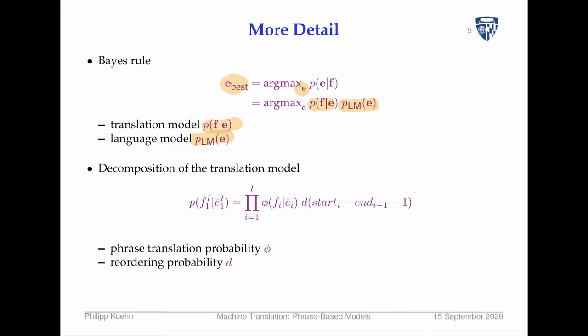The number of phrases I is the same for English and foreign phrases because we have a one-to-one mapping between them. We score each foreign phrase given the English phrase — the probability that a foreign phrase is a mapping of the English phrase. This direction is the inverse of the actual translation direction, due to the noisy channel model.